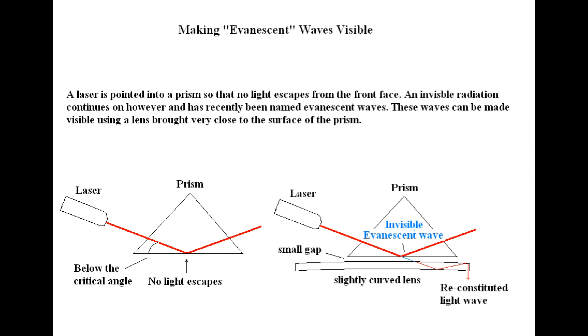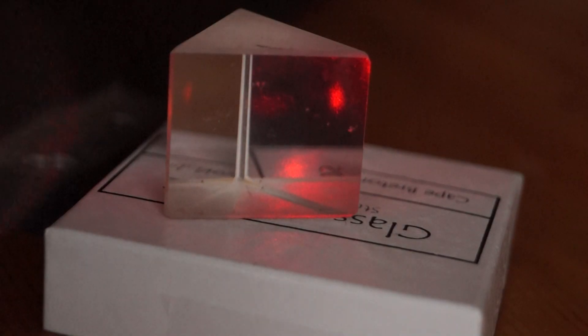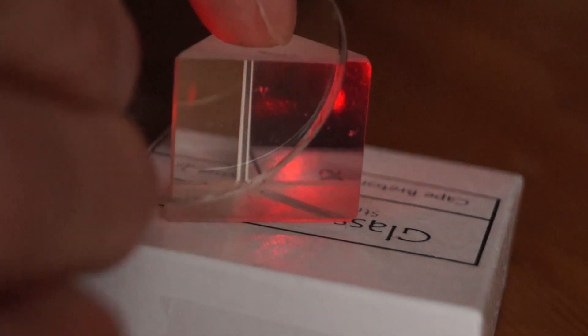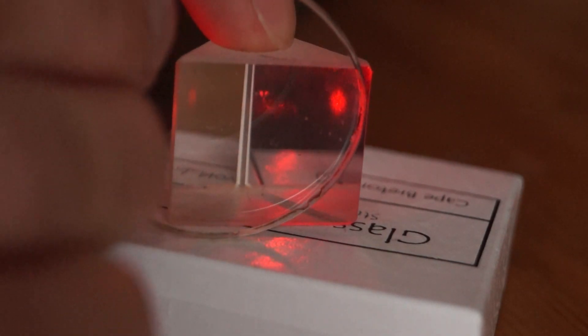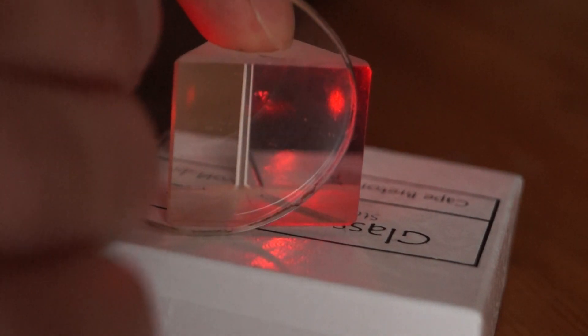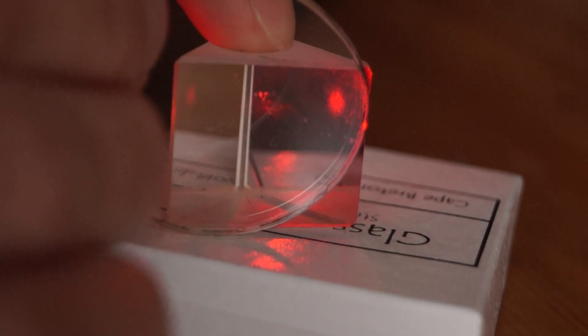These waves can be made visible using a lens brought very close to the surface of the prism. The lens must be slightly curved, allowing it to be rocked back and forth. This motion creates a very thin air gap that is required for the evanescent waves to pass.